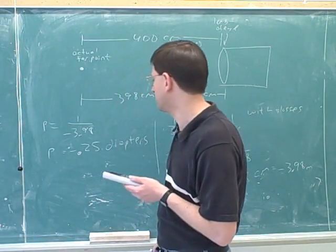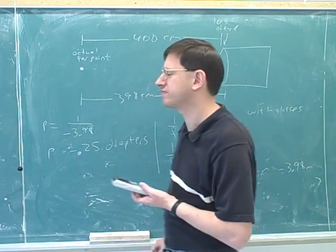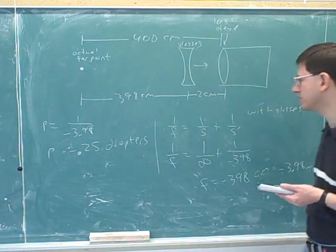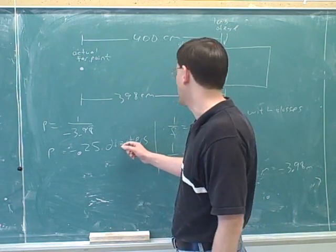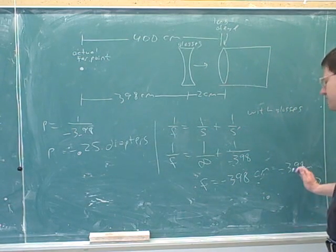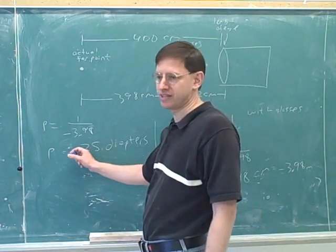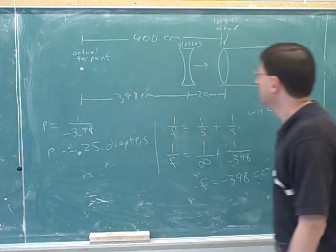Maybe the best answer is that we need lenses with a power of negative 0.25 diopters. Or I think you could get full credit here by saying lenses with a focal length of negative 398 centimeters. But it's good that you remembered diopters are inverse meters. So it's okay to say the focal length is in centimeters, but if you're going to translate it into diopters, you've got to go into meters first. That's a common mistake. And powers do have signs, so it's important to put in the right sign over here.